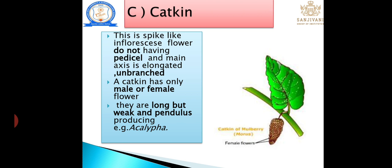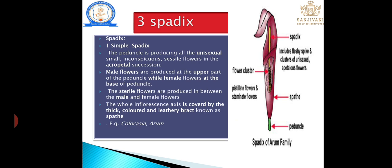Catkin special characters: the inflorescence is unbranched and produces only male or female flowers. The peduncle is long but weak, forming a pendulous, cat-like tail structure. For example: Quercus (oak). Next is spadix, classified into three types: simple spadix, compound spadix, and mixed spadix.